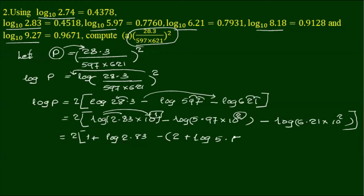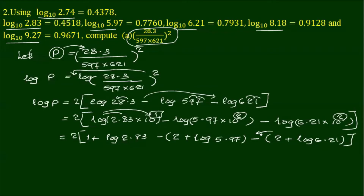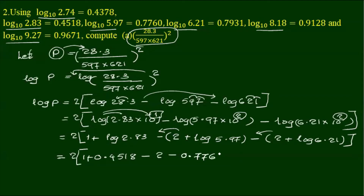5.97 minus 2, plus log 6.21. Now let's take a look at the second step.